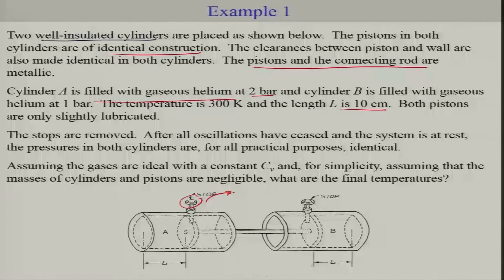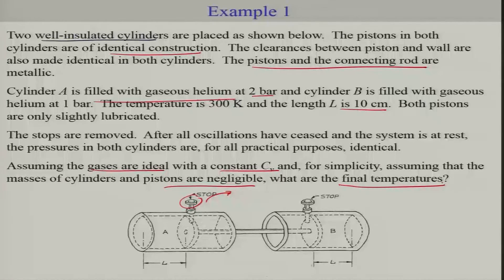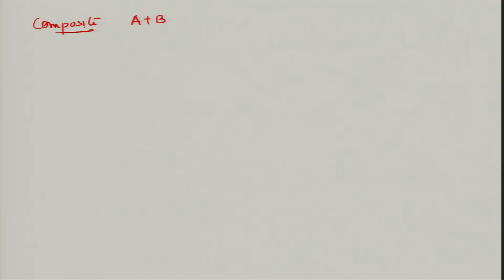Once the stop is released it will oscillate and eventually reach an equilibrium point, as we know from postulates, and at that condition the pressures in both systems can be considered the same. Assuming the gases are ideal with constant heat capacity, and for simplicity assuming that the mass of cylinders and pistons are negligible, what are the final temperatures in these two cylinders? One approach is to apply the first law to the composite A plus B system, which will make it much easier.